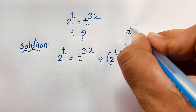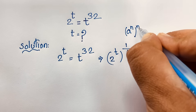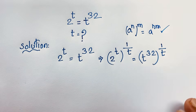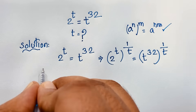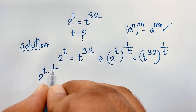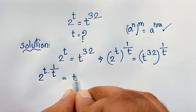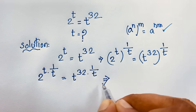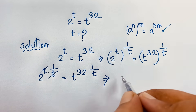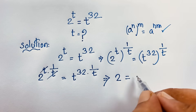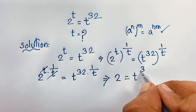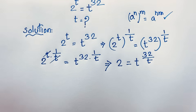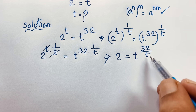We know the exponential formula: a to the power n, raised to the power m, equals a to the power n times m. Applying this formula, 2 to the power (t times 1 over t) equals t to the power (32 times 1 over t). The t's cancel on the left, giving us 2 to the power 1, which is 2, equal to t to the power 32 over t.